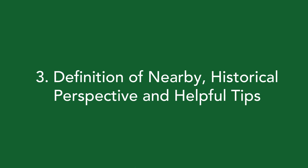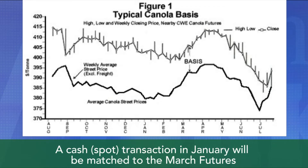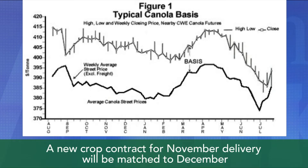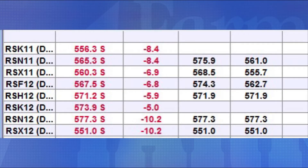Our third topic today is defining nearby futures, providing a historical perspective, and including some helpful hints. Basis is typically matched to the nearest futures month — it's the front month after the cash transaction. A cash spot transaction in January will be matched to the March futures. A forward contract from March will be matched to May. A new crop contract from November will be matched to December. Here's an example of canola where the nearby futures front month is May at $5.56 per metric ton.